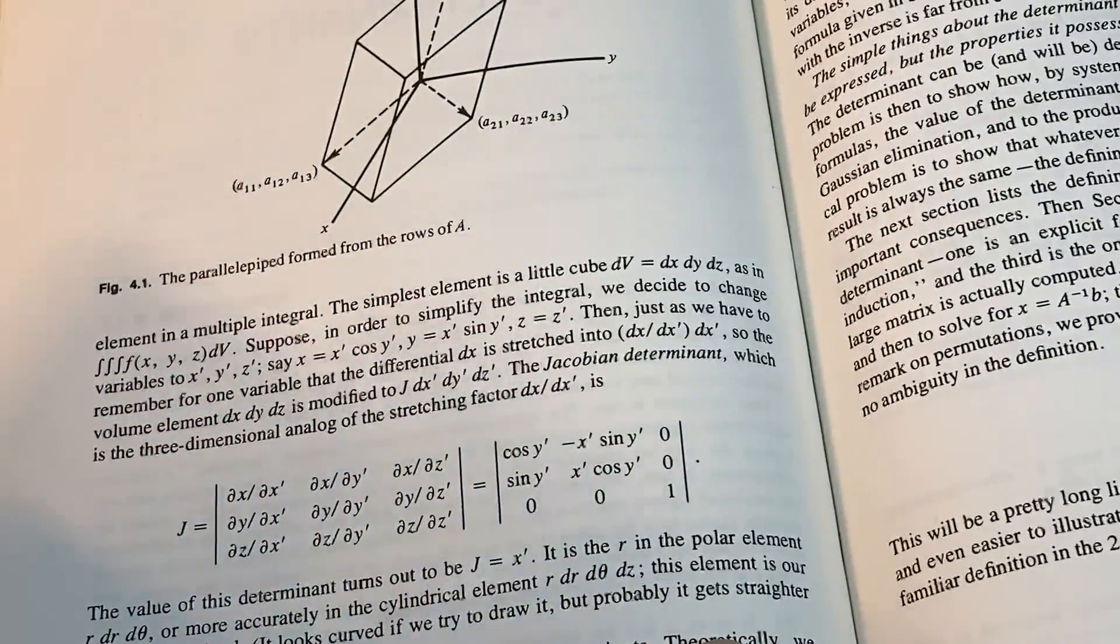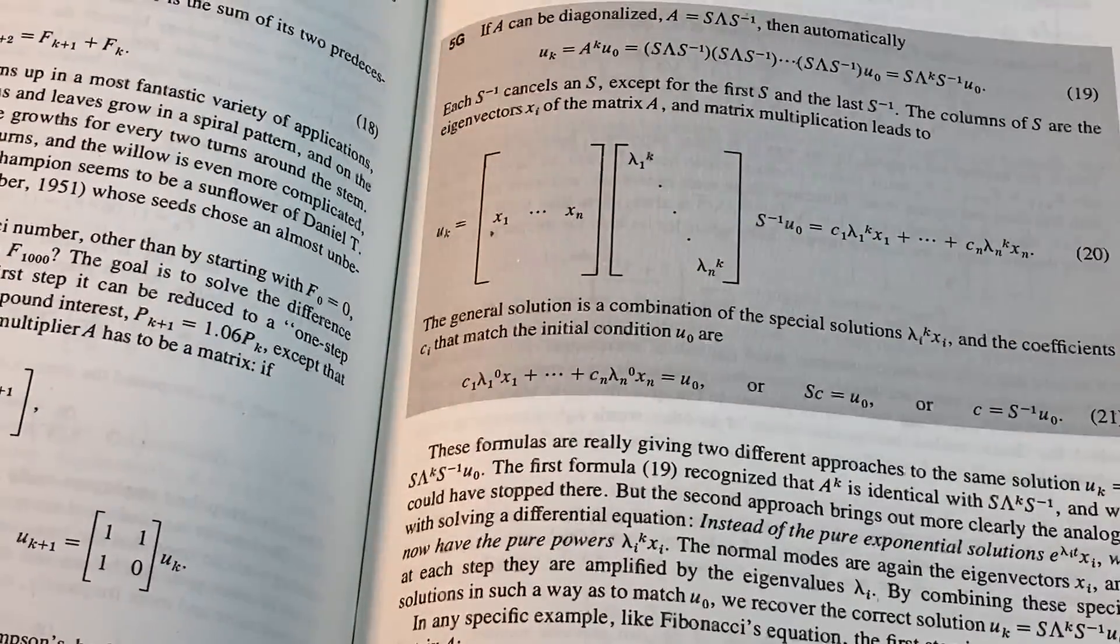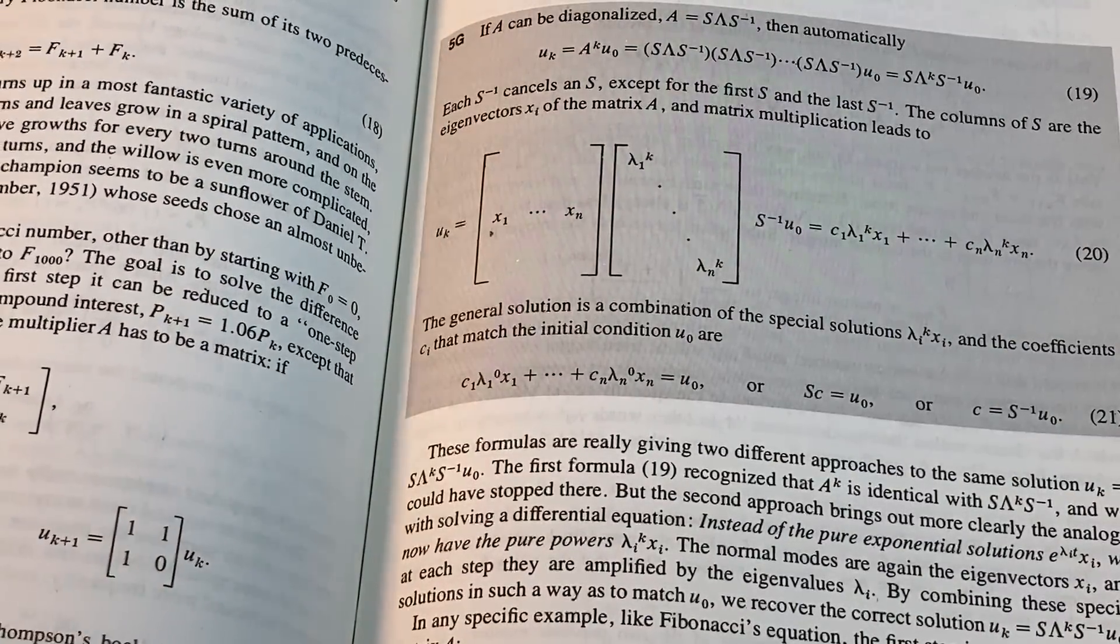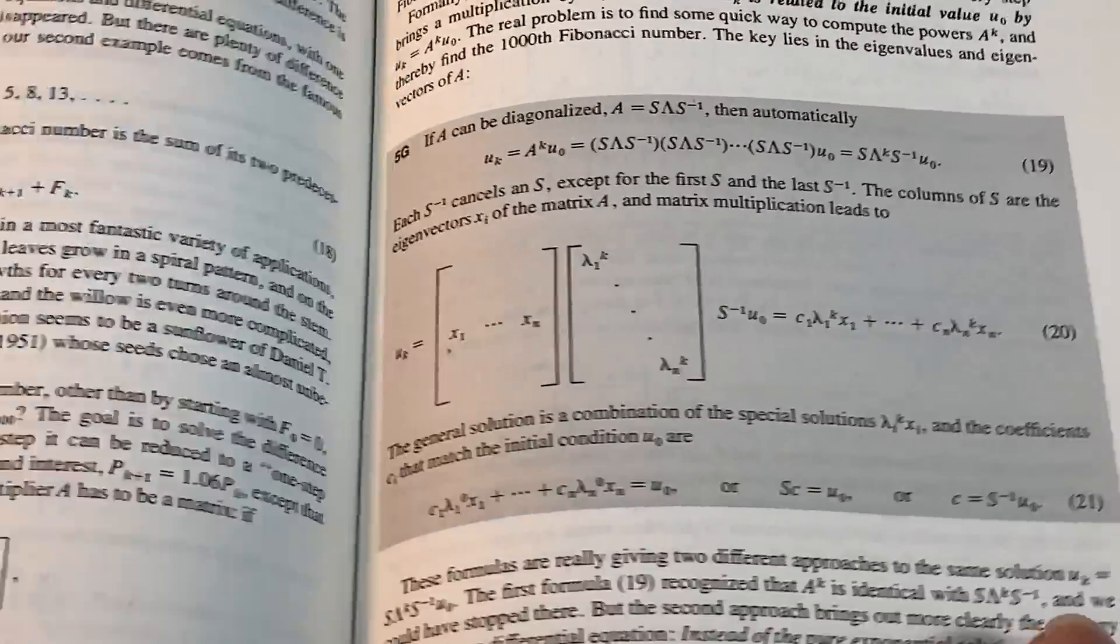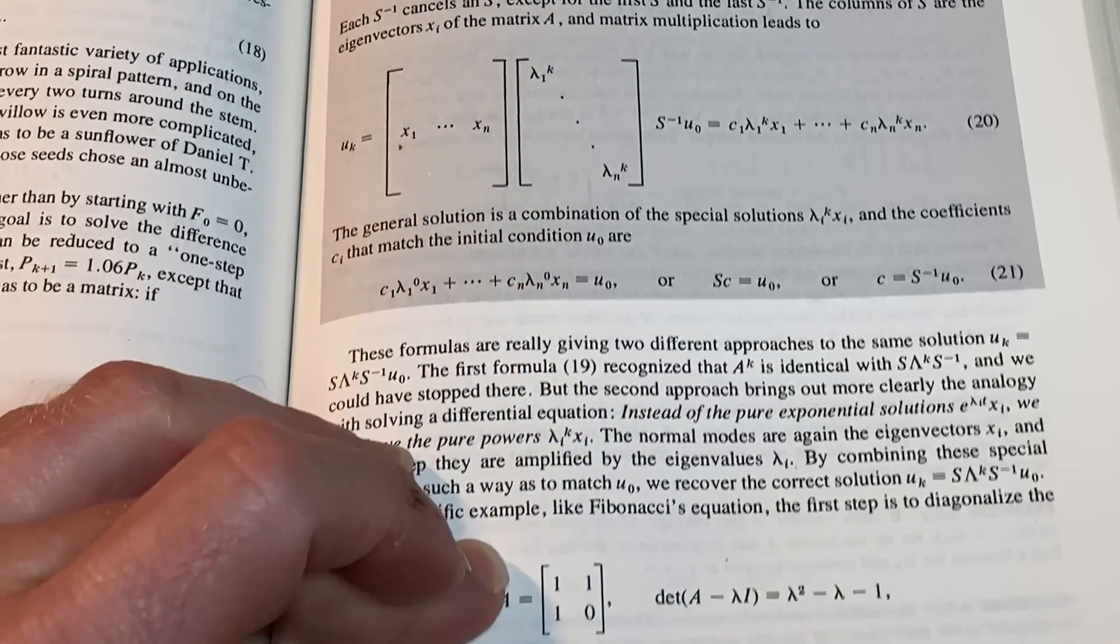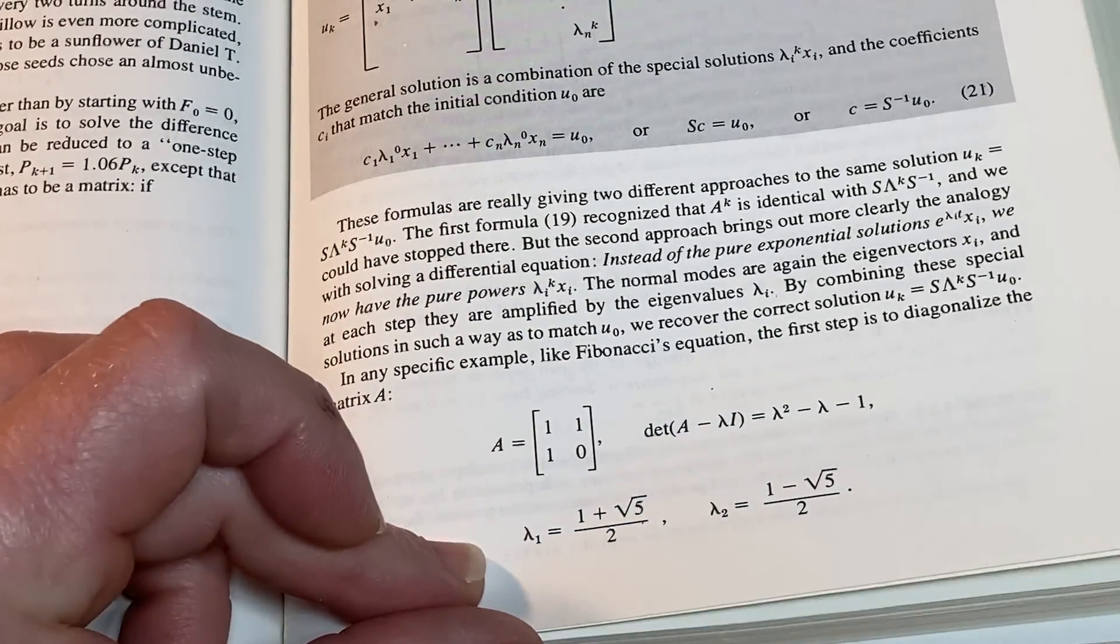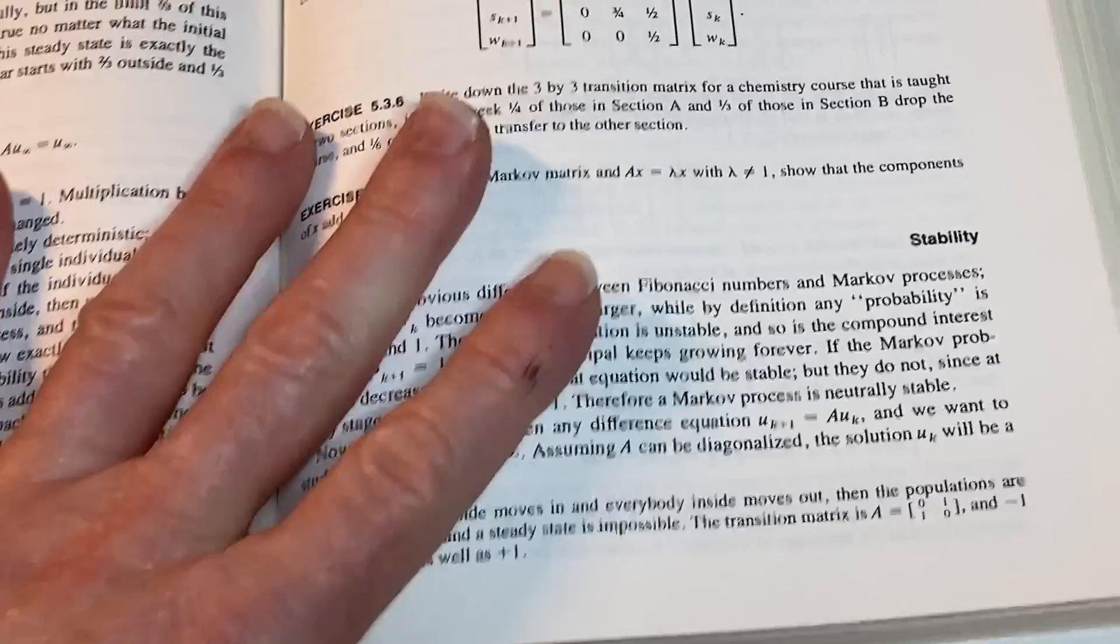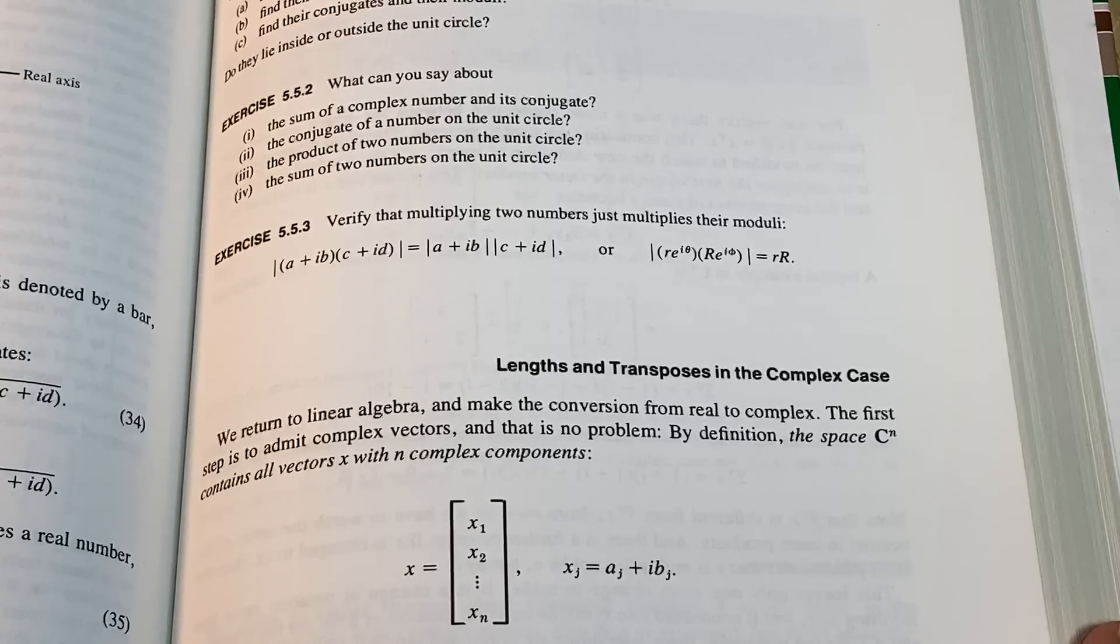So it does appear everywhere and it makes linear algebra a beautiful subject. Oh the Fibonacci sequence, yeah that's an important sequence. Very cool. The golden ratio, yes the Greeks thought that was an incredible number. So all kinds of interesting mathematics in this textbook from the past.